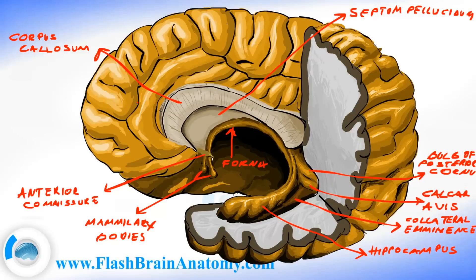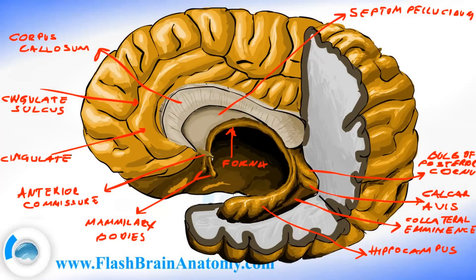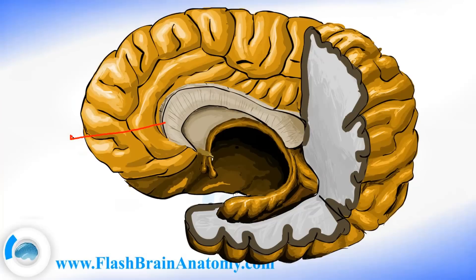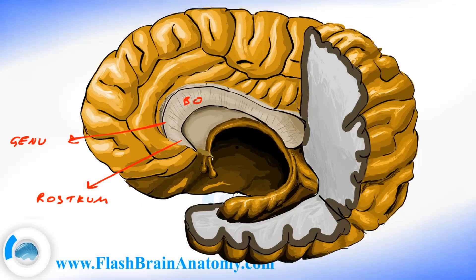Then we had the cingulate sulcus and we had the cingulate gyrus. This part over here was the genu of the corpus callosum, which means the knee — it's the most anterior part. This part was the rostrum. This was the body of the corpus callosum. And this over here was the splenium of the corpus callosum.